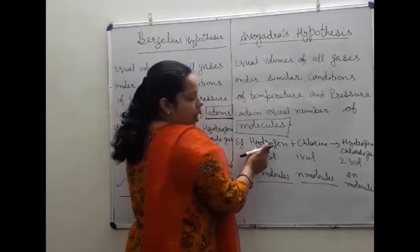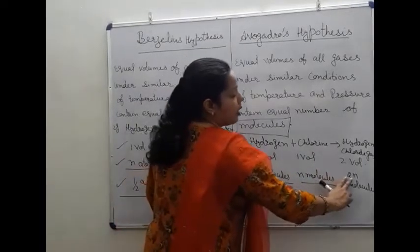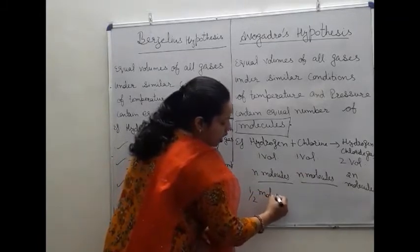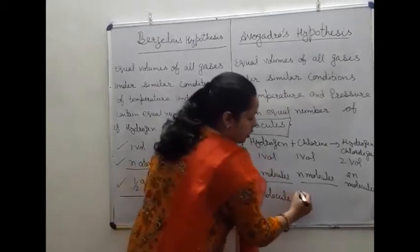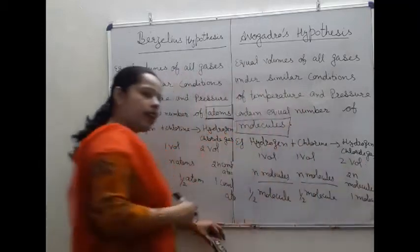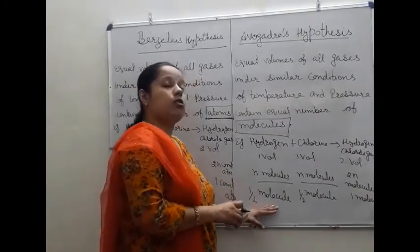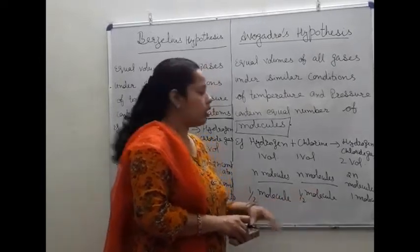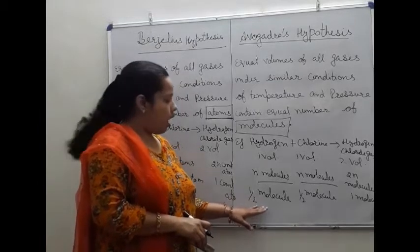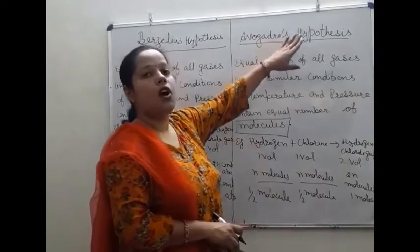One volume of hydrogen has n molecules and one volume of chlorine has n molecules present. So n molecules of hydrogen combined with n molecules of chlorine form 2n molecules of hydrogen chloride gas. Similarly, half a molecule of hydrogen combined with half a molecule of chlorine forms one molecule of hydrogen chloride gas. Half a molecule is possible because a molecule may contain one or two atoms.